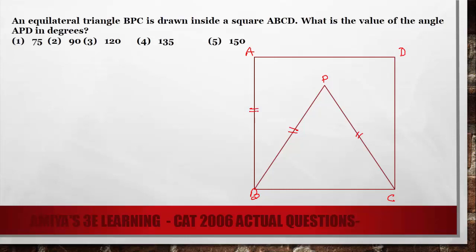Since this is a square, all sides should be equal and all angles should be nothing but 90 degrees. And B, P, C is nothing but an equilateral triangle, so we can say this angle is 60, 60, 60.